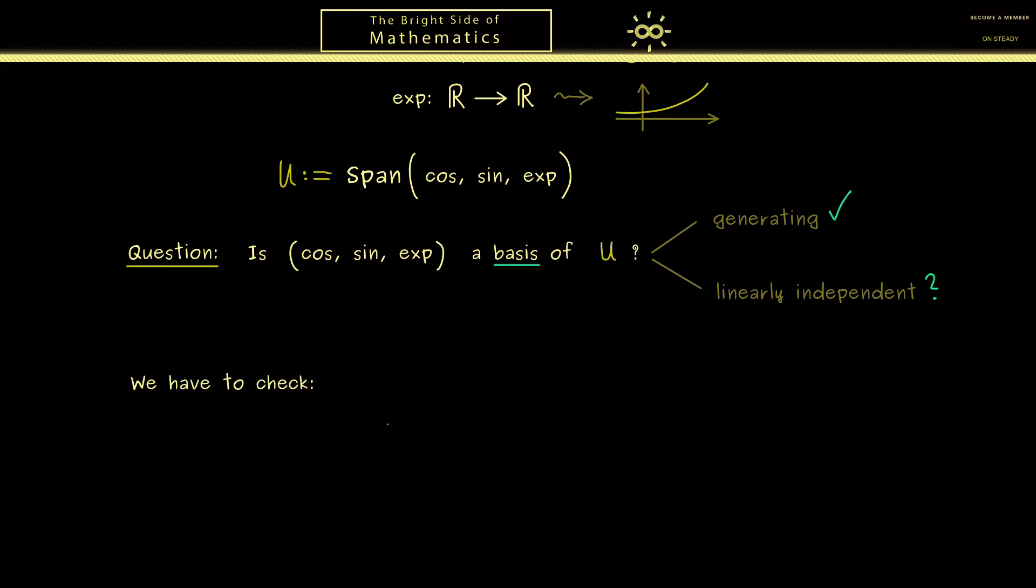So the first thing we have to do is to write down a linear combination with these three vectors. And then the result of this linear combination should be the zero vector. And now linear independence means that the only possibility for this linear combination is the trivial one. This means all coefficients, all scalars alpha have to be zero here. So this is what we have already learned and it's very important to have this definition in mind.